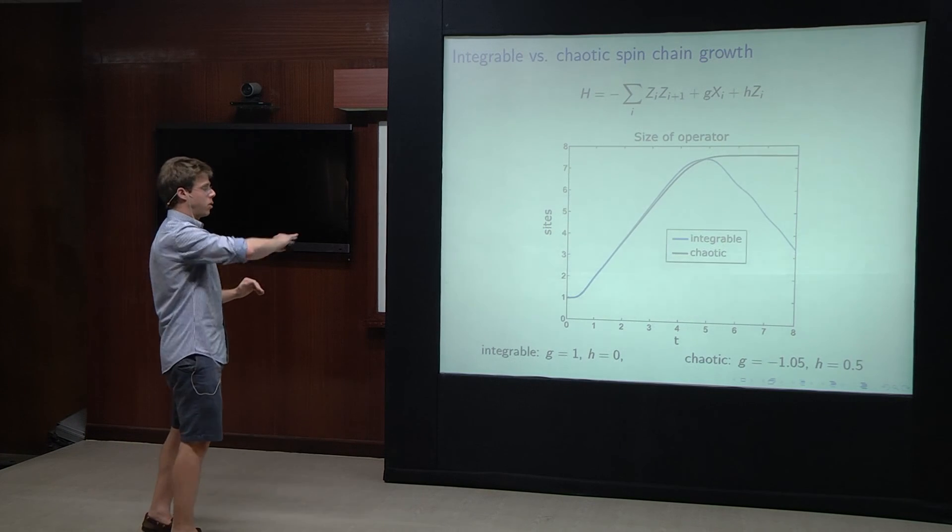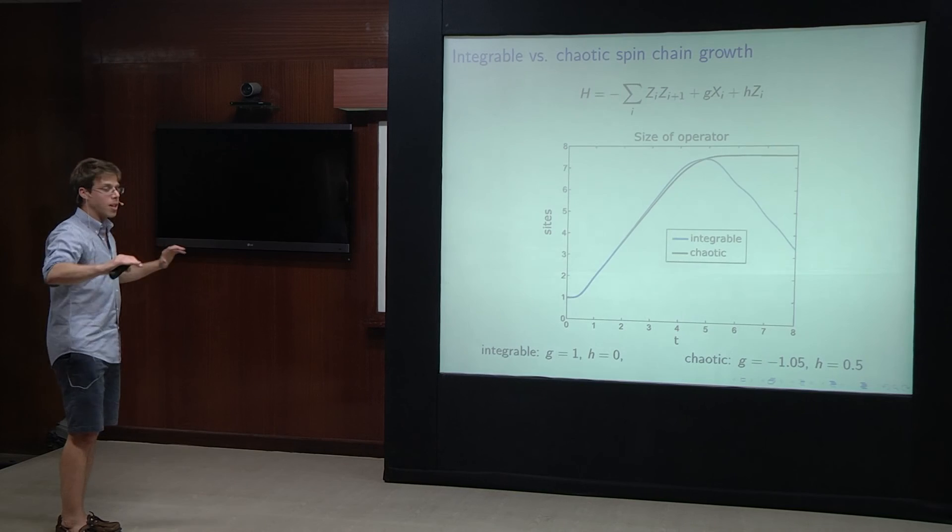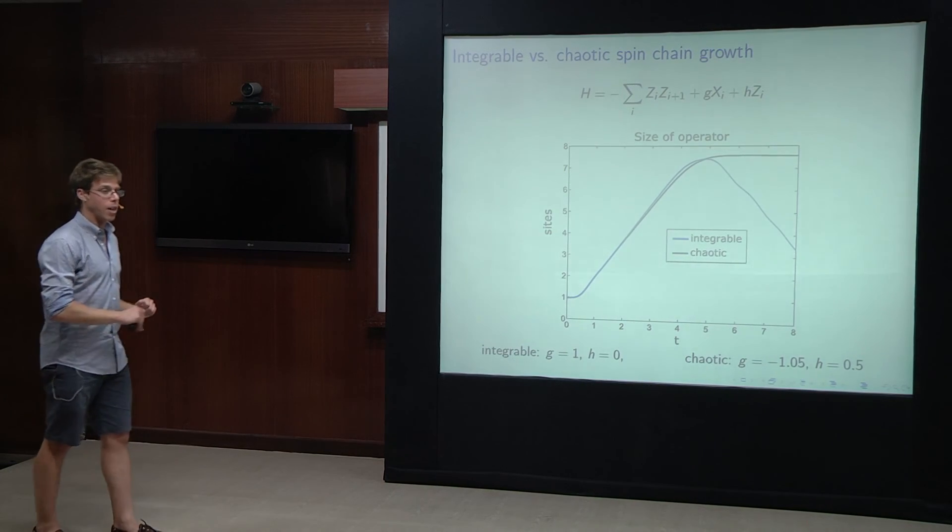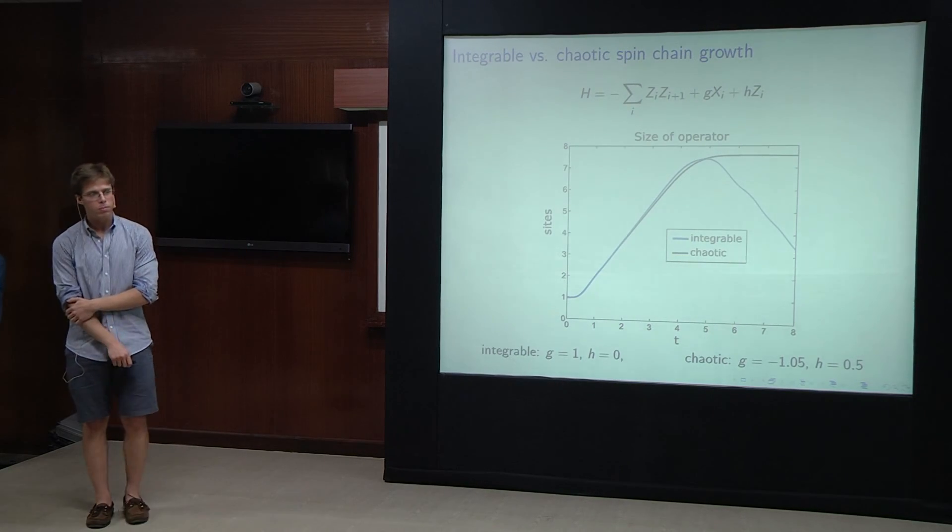So if you pick the wrong set of variables, it looks like it's growing, but then it bounces off the end of the chain, and it starts shrinking immediately. Whereas, for the chaotic system, it's just gonna stay, the size of this operator is gonna stay of order the size of the system for a doubly exponentially long time. Whereas the integrable one, it's just gonna bounce back and forth. Thank you.